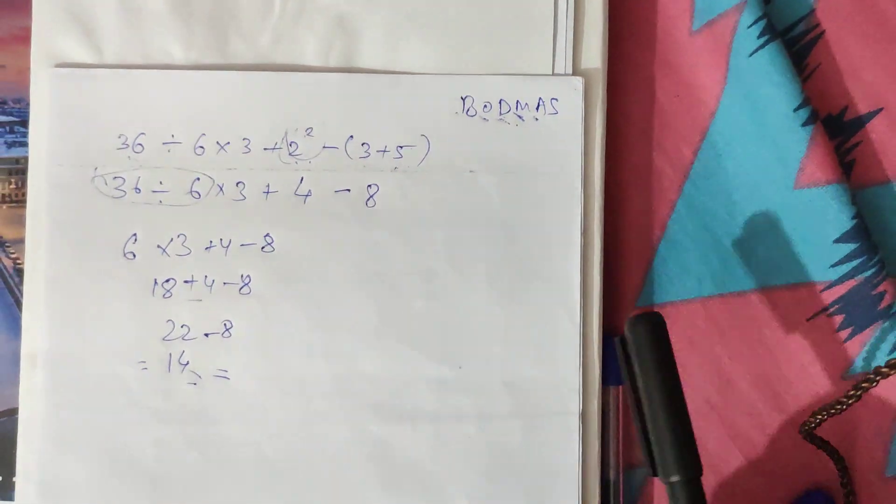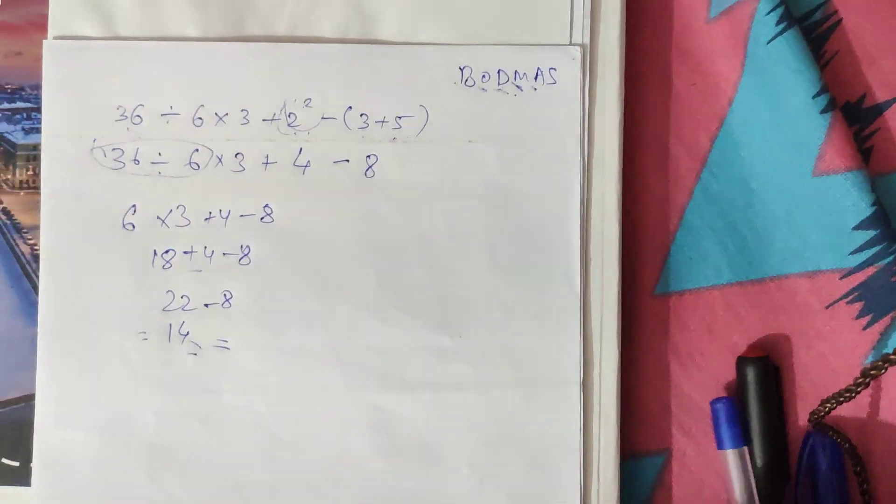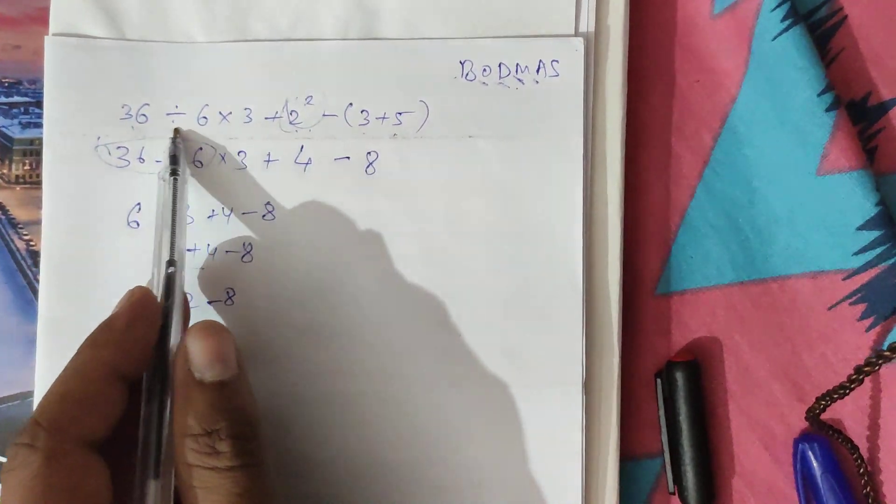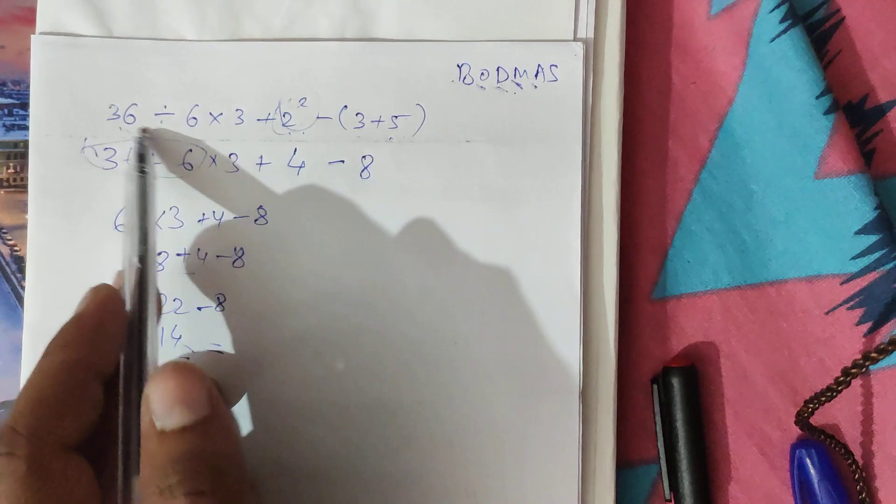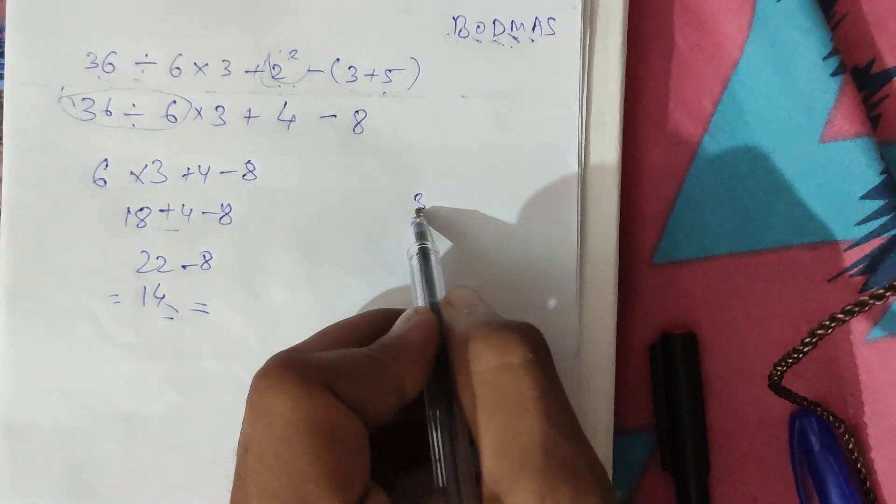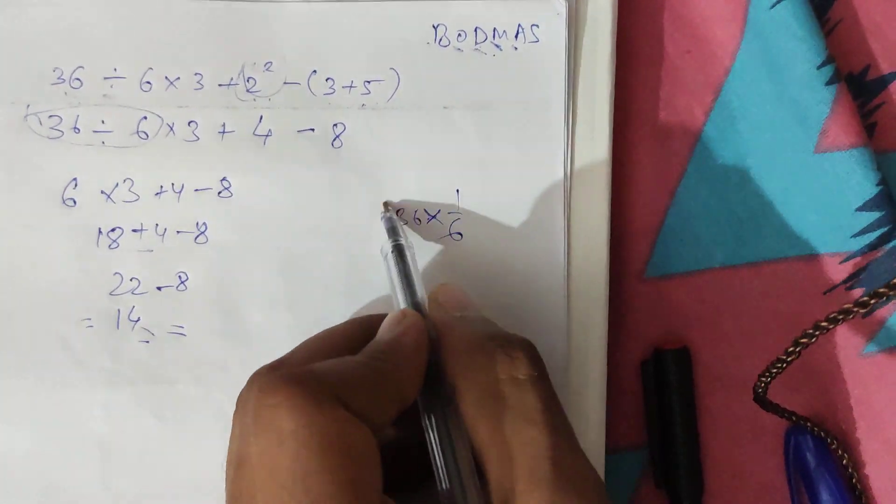Also, in this one, the division we can convert it to multiplication. 36 divided by 6 is nothing but 36 into 1 by 6.